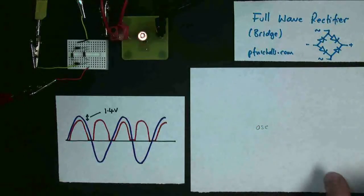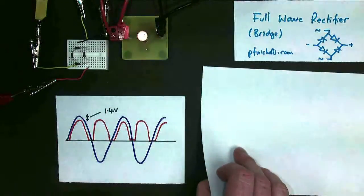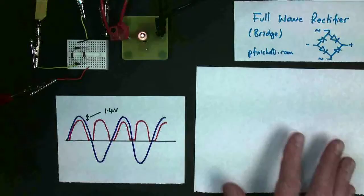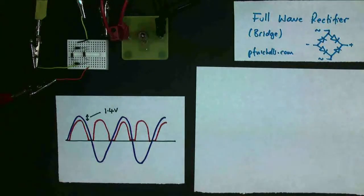But for now, I want to show you how to draw the regulator. So we'll put the oscilloscope away, and we'll find ourselves a pen, and you draw it like this.